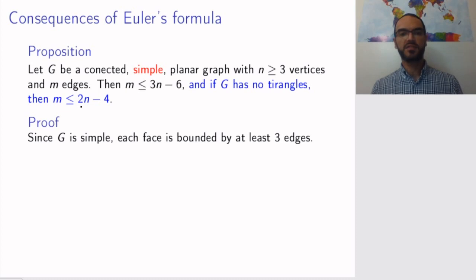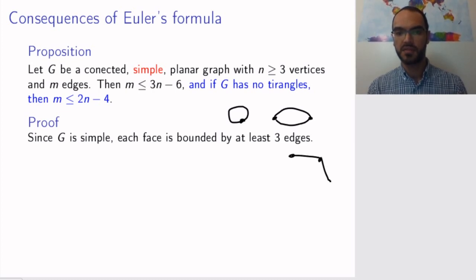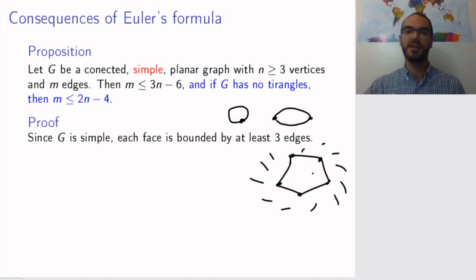So how do we prove such a thing? Well, since your graph is simple each face has to be bounded by at least three edges. If a face is bounded by two edges you are dealing with a multiple edge. If it's bounded by one edge you are dealing with a loop. But neither of those can occur so if you have a face somewhere the surrounding of this face has to have at least three edges. This also applies to the infinite face. So if this is my graph then the infinite face here is itself bounded by these edges.